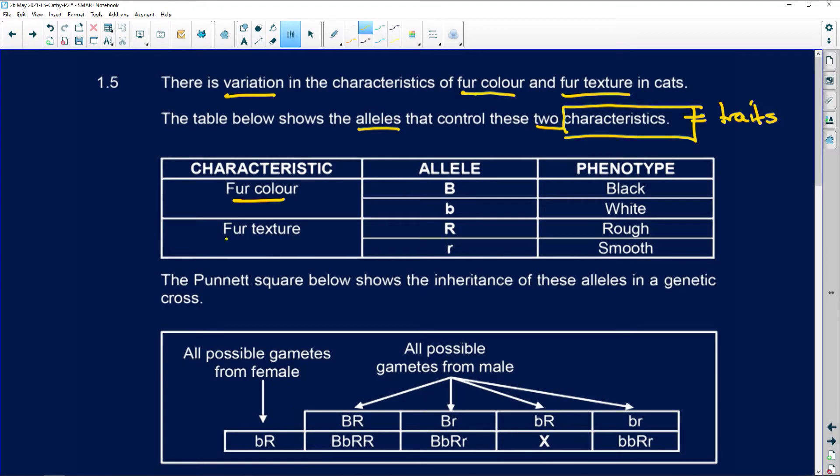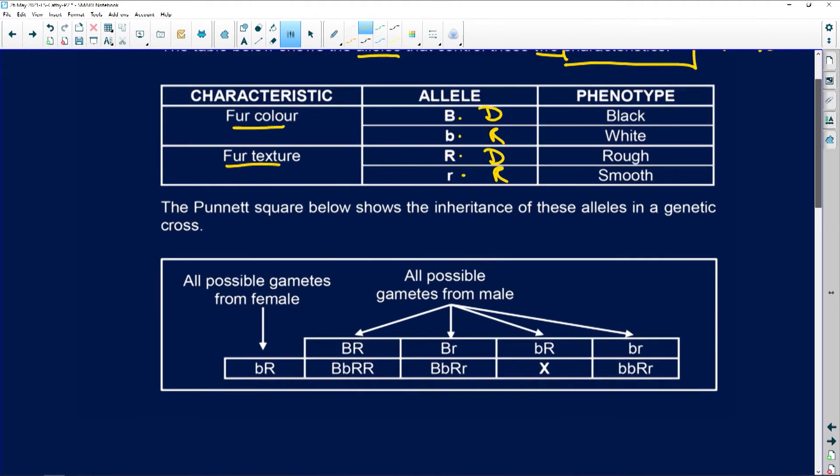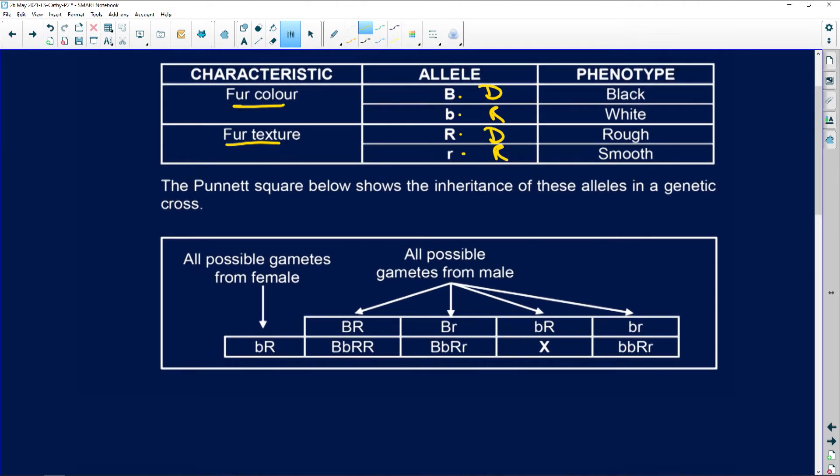Alright, so characteristics - here we've got our fur color and our fur texture. They've given you B as a capital and lowercase b, and then a capital R and a lowercase r. The assumption is that this is the dominant, that's the recessive, the dominant and the recessive alleles. So the Punnett square below shows the inheritance of these alleles in a genetic cross.